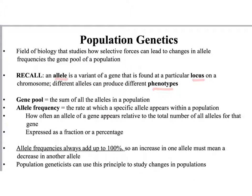A locus is the location on a chromosome where you find a particular gene that codes for a particular trait. Recall the difference between genotype and phenotype: a genotype is the combination of alleles that an organism possesses, and the phenotype is the outward expression of those alleles.